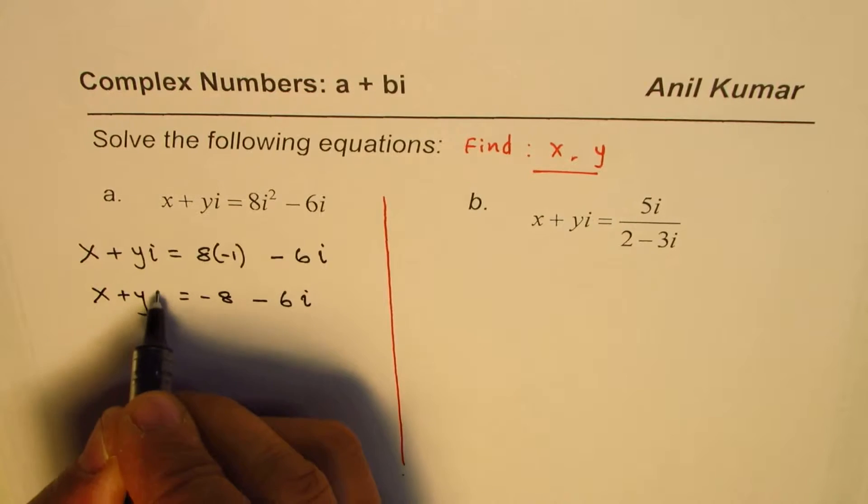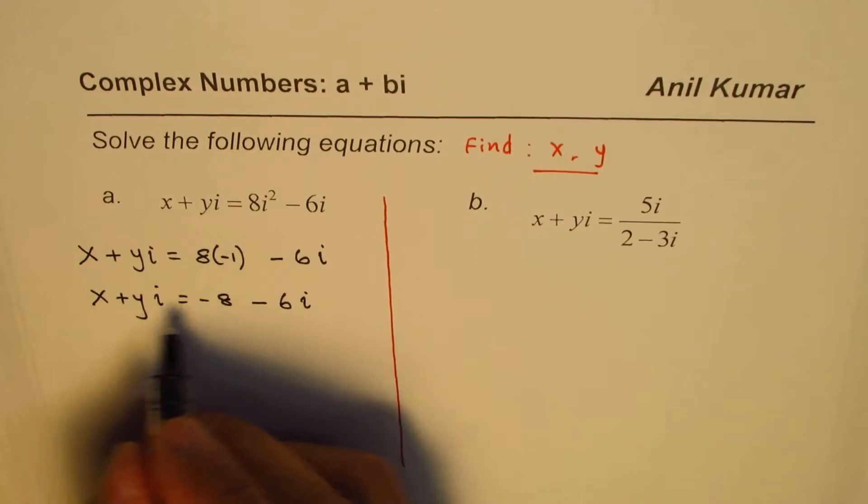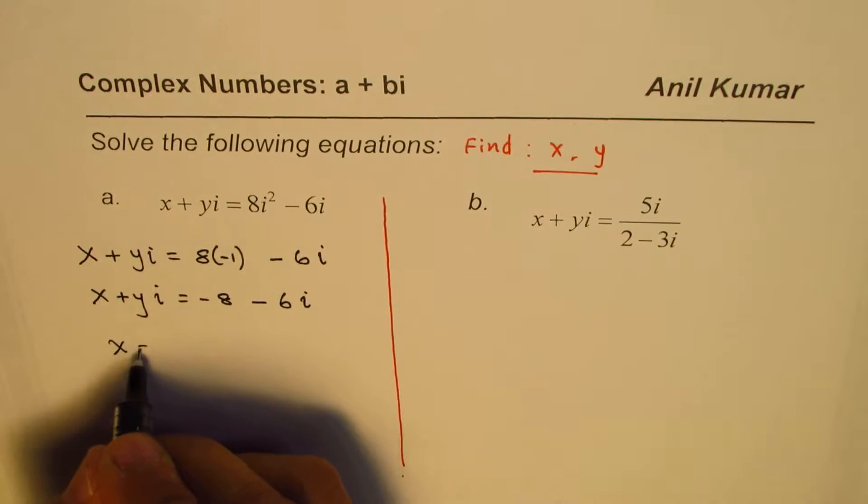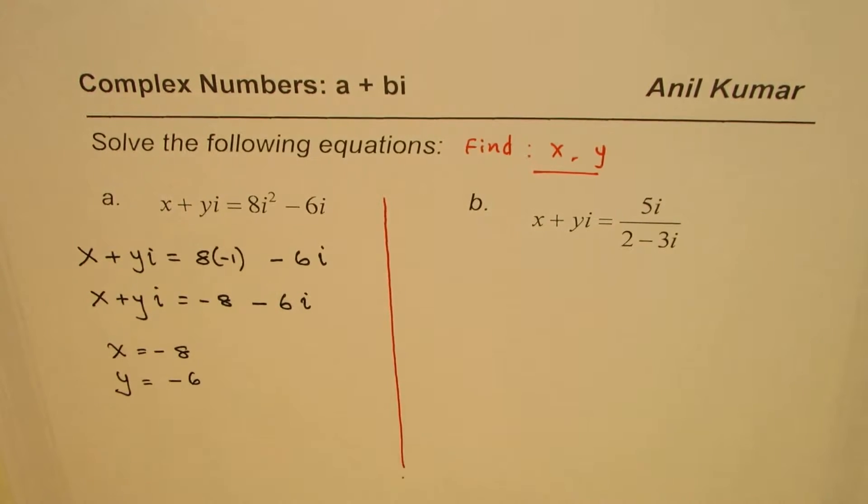So this is x plus yi. Comparing the two, real parts should be equal. So x equals minus 8 and y equals minus 6. That is the solution.